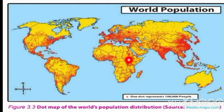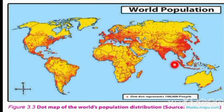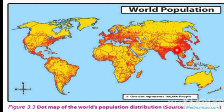This map shows world population distribution. The red color indicates population distribution across the globe. One dot indicates 100,000 population. Dots close to each other indicate densely populated areas, and dots far apart indicate sparsely populated areas.